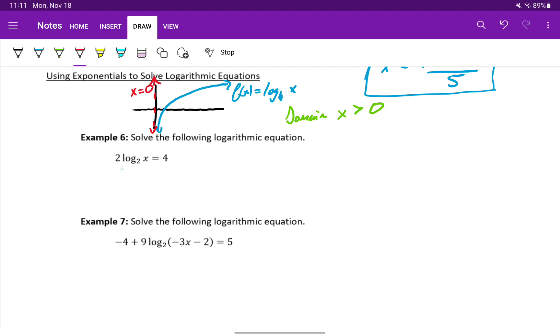In example six, our first step will be dividing both sides by two to isolate that log statement by itself, which will give us log base two of x equals two. Now what we can do is rewrite this using the exponential form by taking that base raised to the power on the opposite side, giving us two squared equals x, or x equals four.